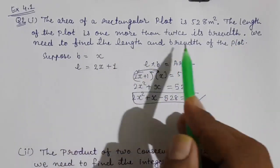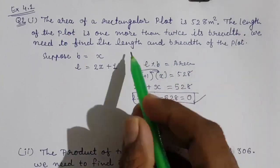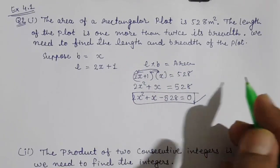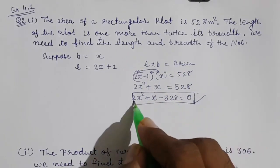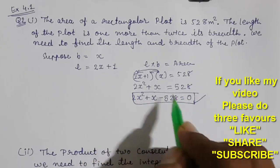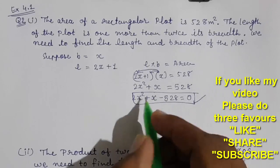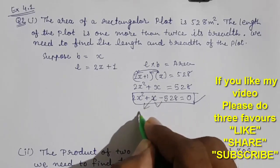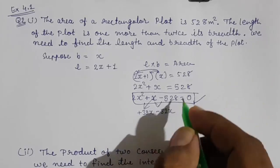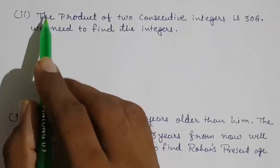They asked us to find the length and breadth, but actually we just need to form the equation. If you want to find the value of x by splitting the middle term, you can. Find the prime factors of 528, multiply by 2, and split. I can tell you directly: splitting gives +33x and −32x, but you only need to solve up to forming the quadratic.